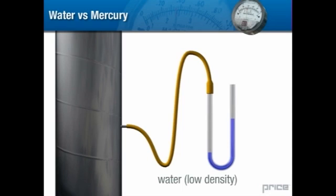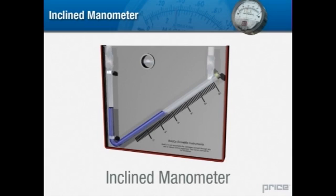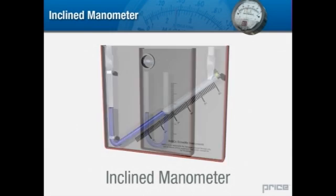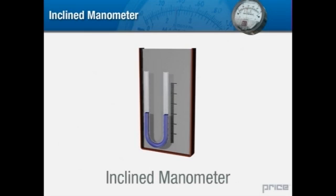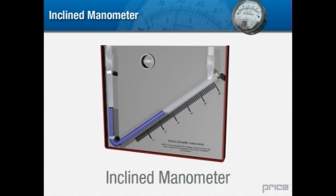For the purposes of measuring the relatively low pressures in ductwork, water is more suitable. To gain even more precision, we often make use of a slightly different type of manometer called the inclined manometer. It works more or less the same as the U-tube manometer, but one of the columns is placed at an angle, therefore making the scale easier to read. A water-filled inclined manometer is used to measure very low pressures in HVAC systems.